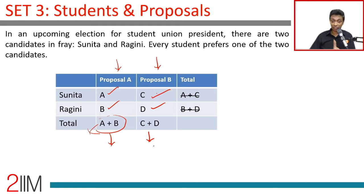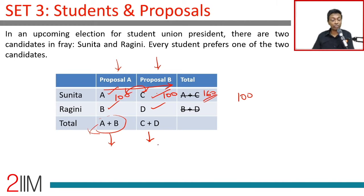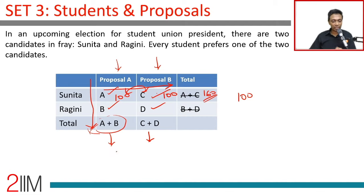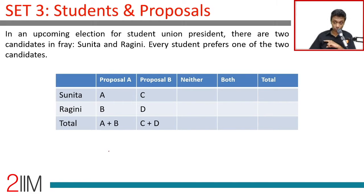But in the other direction — across proposals — it won't be additive like that. You can say 100 people like A and 100 like B, but the total could be only 160 because there's an overlap between the two and nothing outside of them. When capturing data, remember that the candidate dimension is nicely additive. If 50 from proposal A voted for Sunita and 70 voted for Ragini, then 50 plus 70 equals 120 for proposal A total. Keep that in mind.